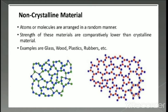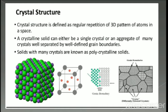Non-crystalline materials are the amorphous solids. Their atoms or molecules are arranged in a random manner and the strength of these materials is comparatively lower than crystalline materials. Examples are glass, wood, plastics, and rubber. In these structures, the atoms and molecules are arranged in an irregular, random manner and have irregular shape.